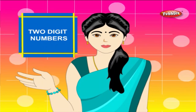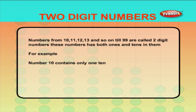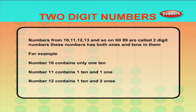Two-digit numbers. Numbers from 10, 11, 12, 13, and so on till 99 are called two-digit numbers. These numbers have both ones and tens in them. For example, number 10 contains only one ten. Number 11 contains one ten and one one. Number 12 contains one ten and two ones.